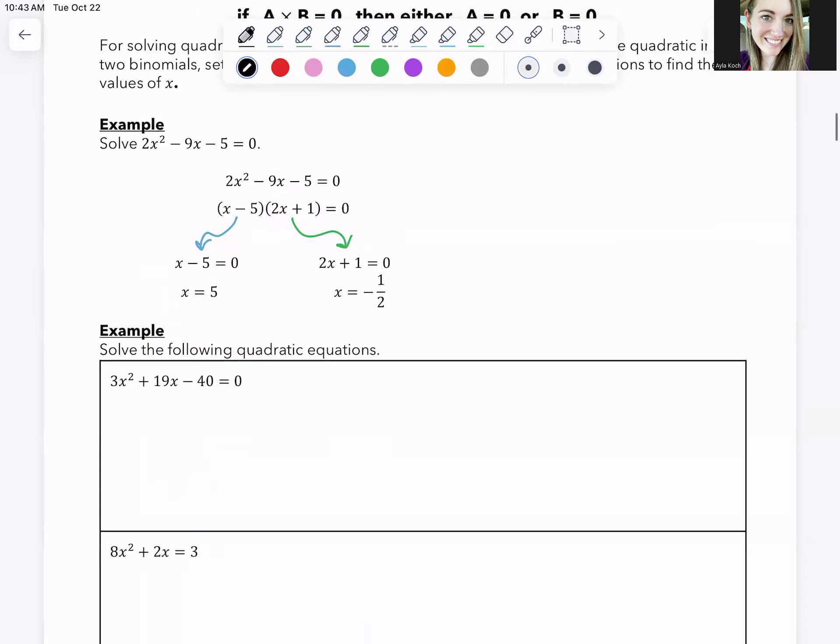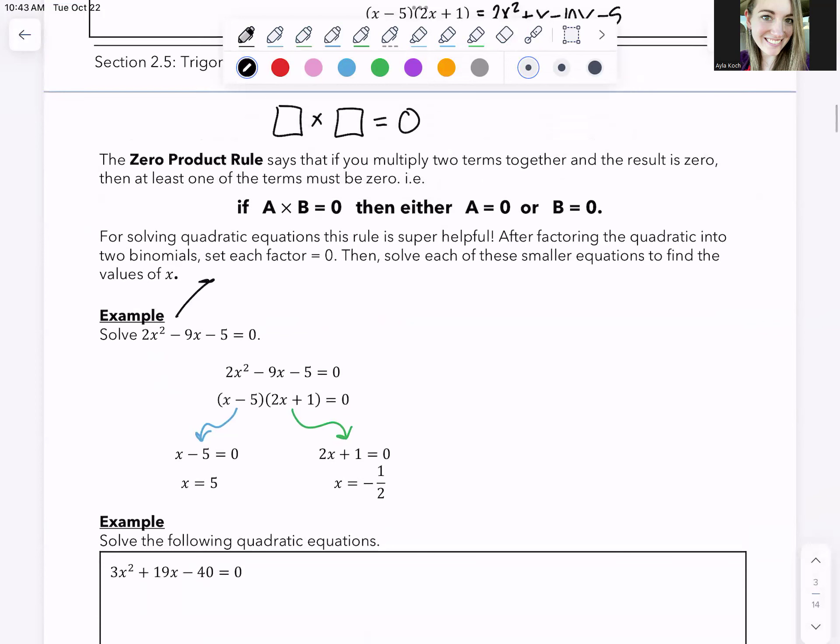And indeed, if you plugged in five to this original equation, if you did two times, two times five squared minus nine times five minus, minus five. If you simplify this, so 25 times two is 50 minus 45 minus five, that is indeed zero. So plugging in five does give you zero, and plugging in negative one half with two.